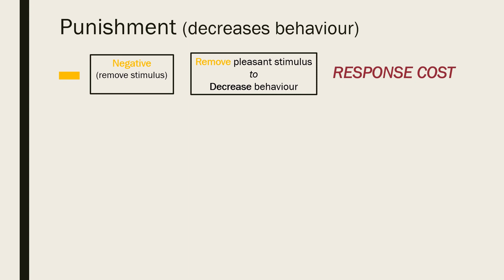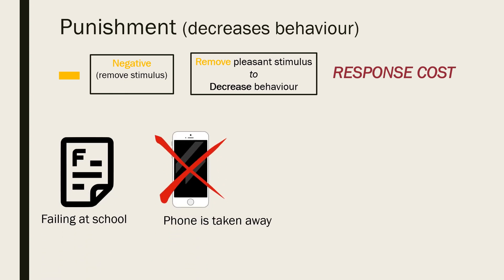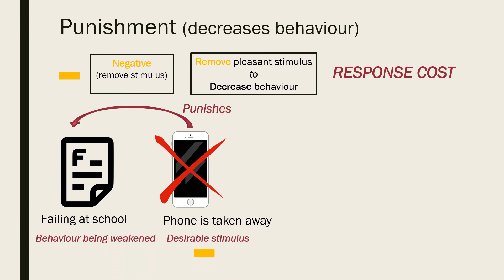For example, you are failing at school and so your parents take away your mobile phone. In this instance, we are still weakening an undesirable behaviour — failing at school — but instead of doing so by applying an aversive stimulus, we are doing it by taking away something desirable: your mobile phone. As a result, you spend more time studying and get better grades in the future.